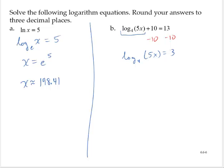Let's convert this to the exponential form. 5x would equal 4 raised to the third power. 4 raised to the third power is 64. And so then we just need to divide by 5 to isolate the x. So then x is equal to 12.8.